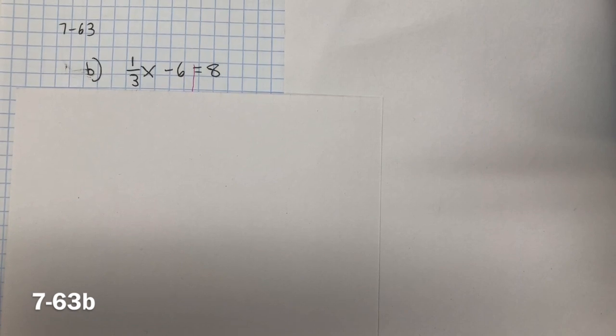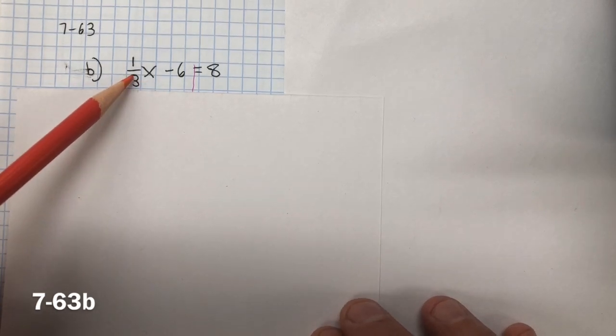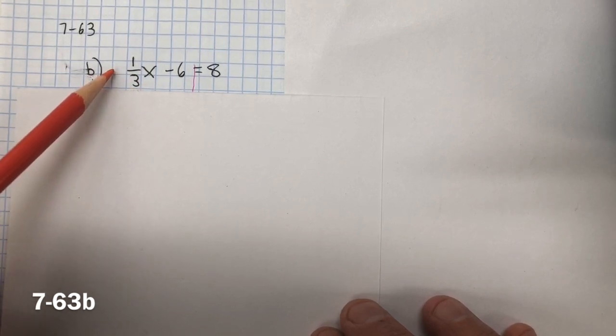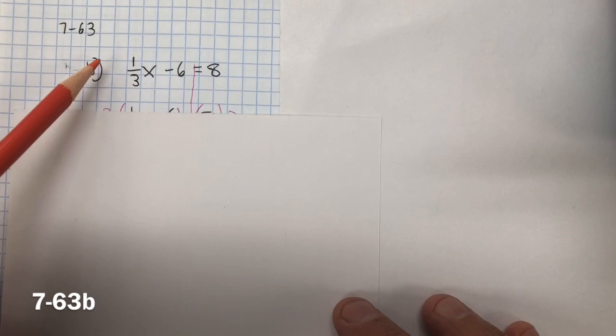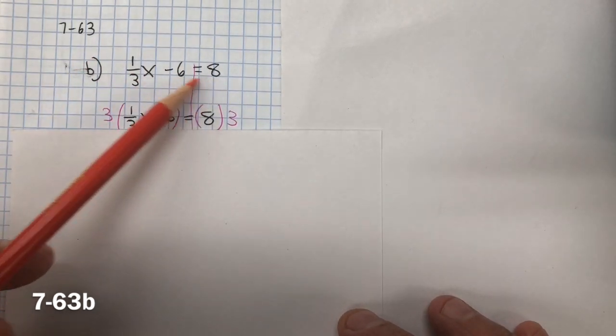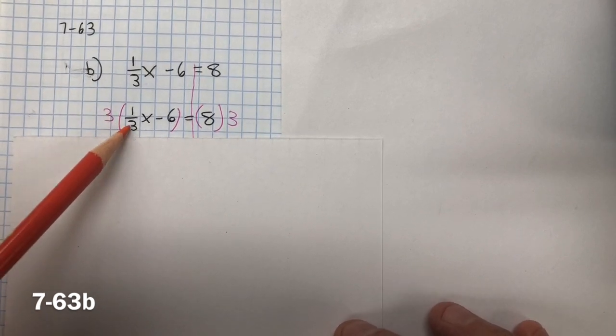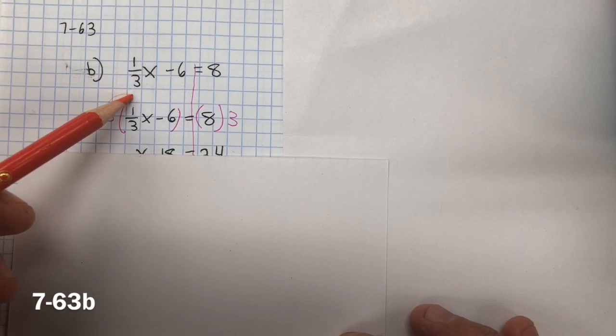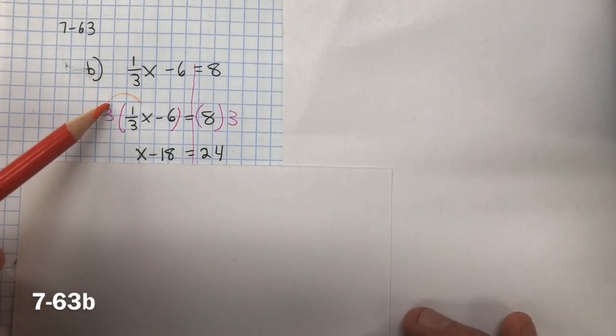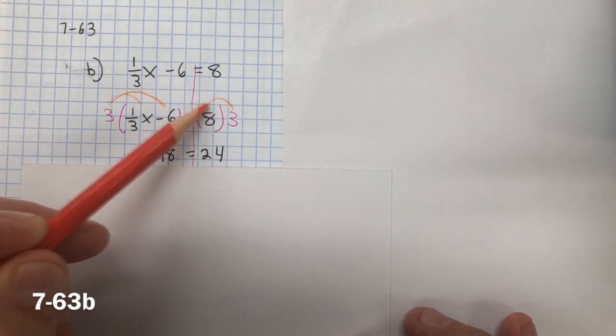In 7-63, you need to solve for x. So we want to get x by itself, so we need to eliminate this 3 in the denominator in one way by using the fraction buster. So we want to distribute a 3 to all 3 of these terms. When we multiply, 3 multiplied by 1 third is 1, so we get 1x. Then 3 multiplied by negative 6 is negative 18, and 3 multiplied by 8 is 24.